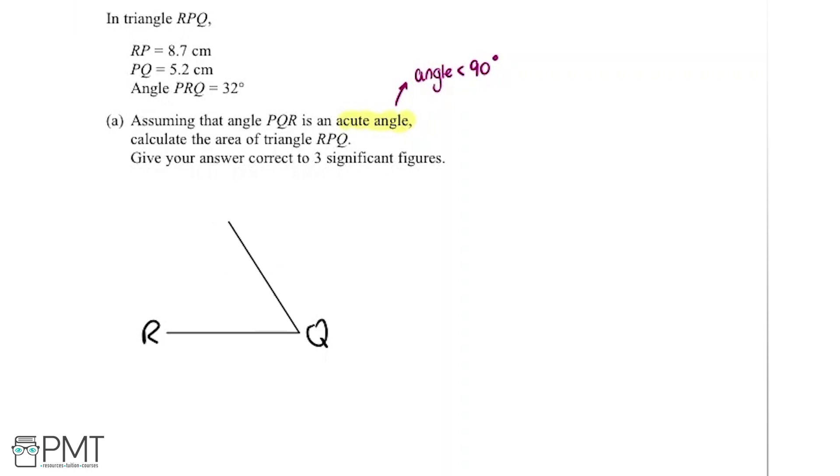I'm going to draw it here and complete the triangle. This side is P. I'm going to fill in the information we know. The length R to P is 8.7 centimeters, P to Q is 5.2 centimeters, and the angle PRQ is 32 degrees. Now we need to work out the area of this triangle.